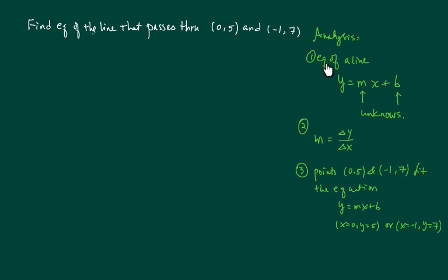Alright, so here's the analysis. Equation of a line is y equal to mx plus b. So basically we're looking for two unknowns, the slope and y-intercept.